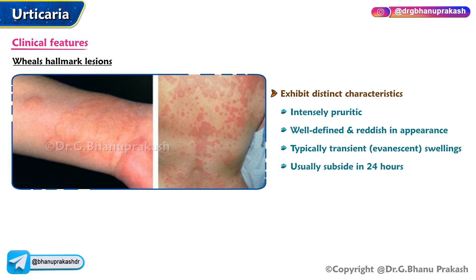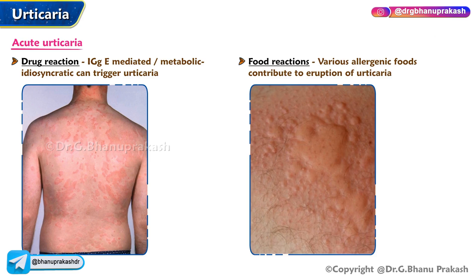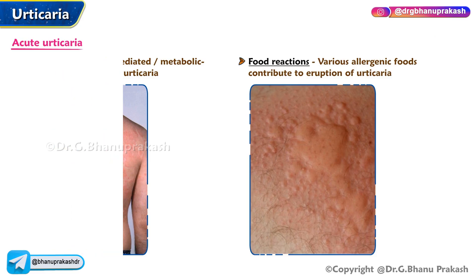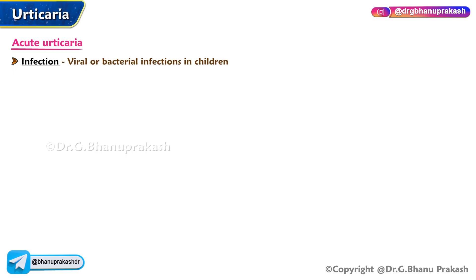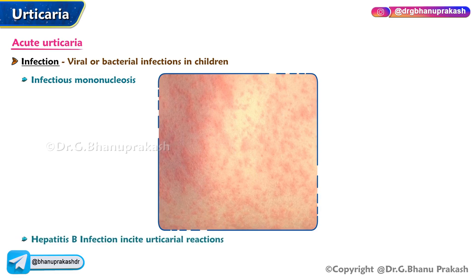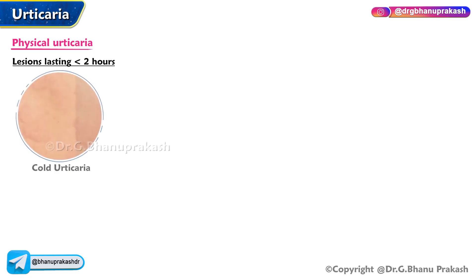Distinguishing urticaria: acute urticaria drug reactions may be IgE-mediated or metabolic/idiosyncratic. Food reactions from various allergenic foods may contribute. Intravenous administration of blood products, contrast agents, or IV gamma globulin can provoke urticaria. Infections — viral or bacterial, including infectious mononucleosis and hepatitis B in children — can also incite urticarial reactions.